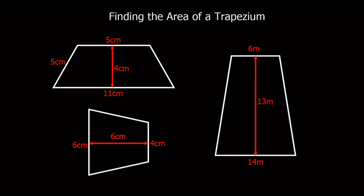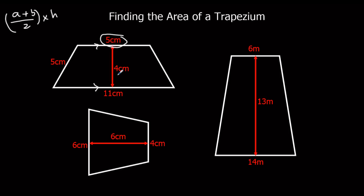Okay, so we're going to look at these examples. Remember our formula: A plus B over two, times the perpendicular height. In this example here, the two parallel sides are this one and this one, so A and B are these two numbers. The perpendicular height is four. This is the slanted height — we don't want that, we're not using it.